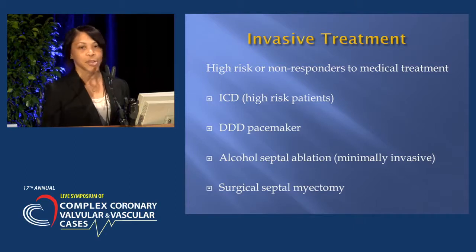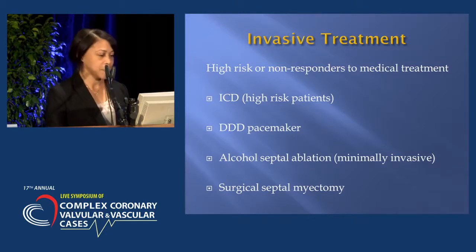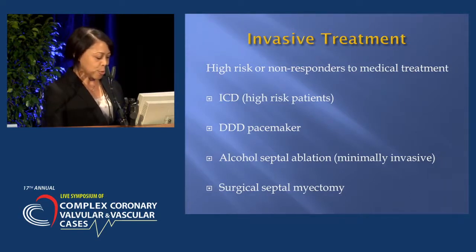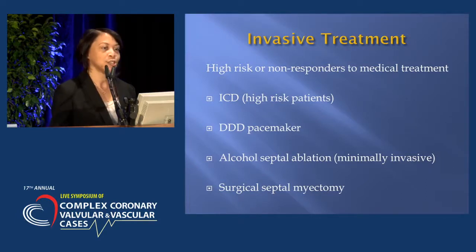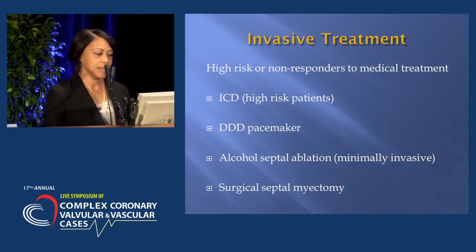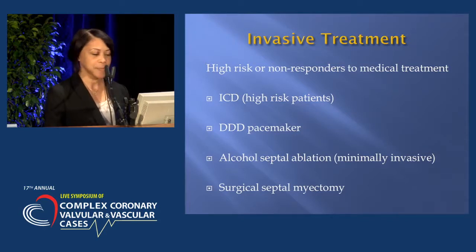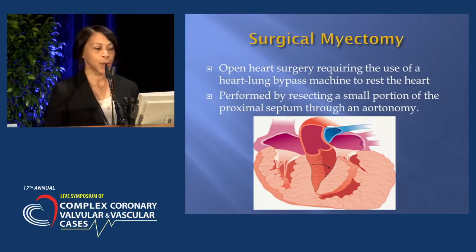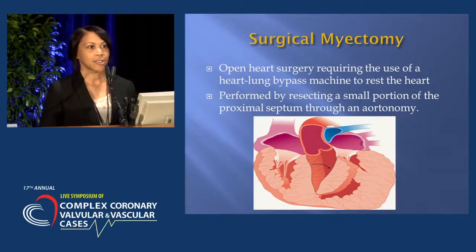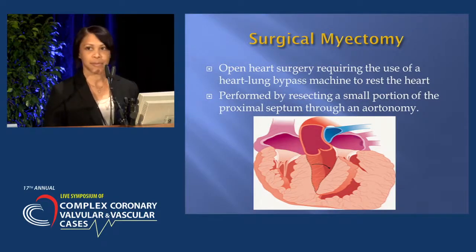There's also a dual-demand pacemaker, which is supposed to offset the conduction of the heart — it's not really primary prevention but usually an adjunct therapy. There's also alcohol septal ablation, which is minimally invasive, and surgical septal myectomy. With surgical septal myectomy, it's open-heart surgery requiring cardiopulmonary bypass to rest the heart so the surgeon can resect a small portion of the septum through the aorta.